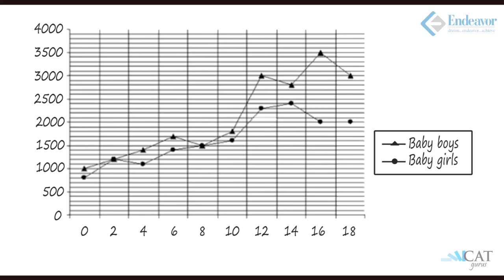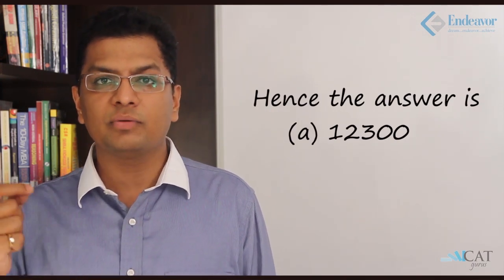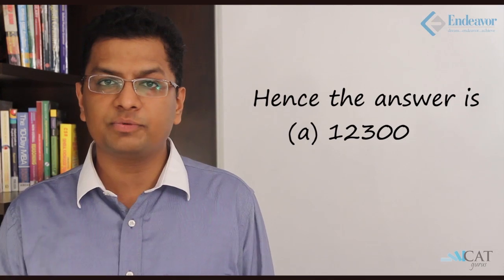For girls: at two months the circle is two notches above 1000, so 1200. At eight months it is exactly 1500. At 16 months it is exactly 2000. Total for girls: 1200 + 1500 + 2000. The grand total for everyone is 12,300, which is the first option — the right answer.